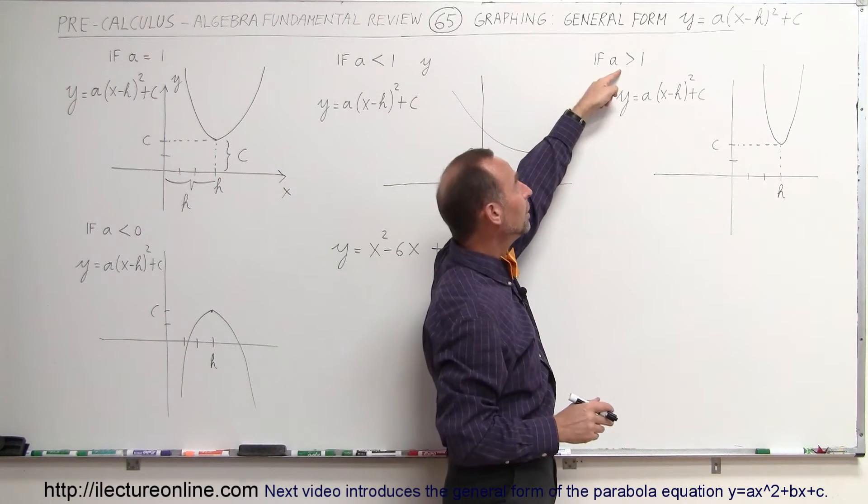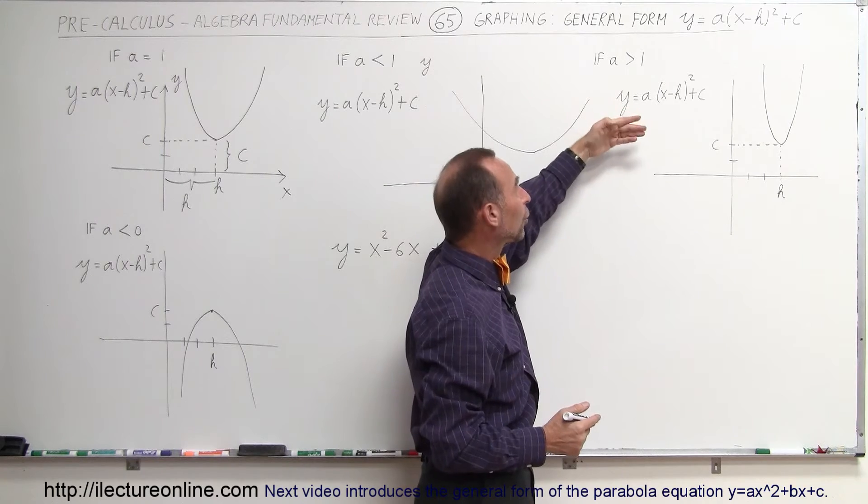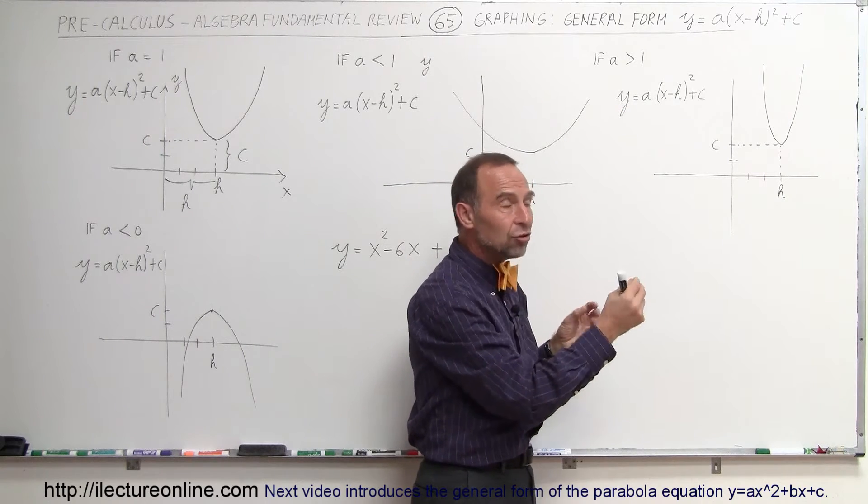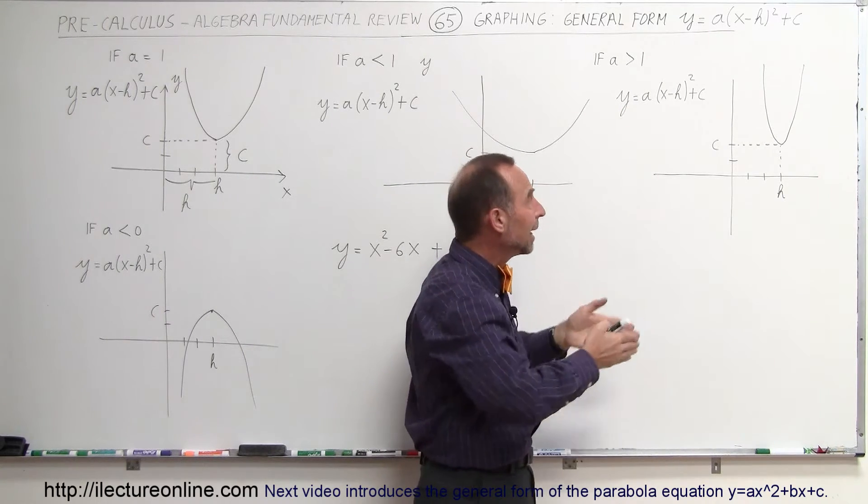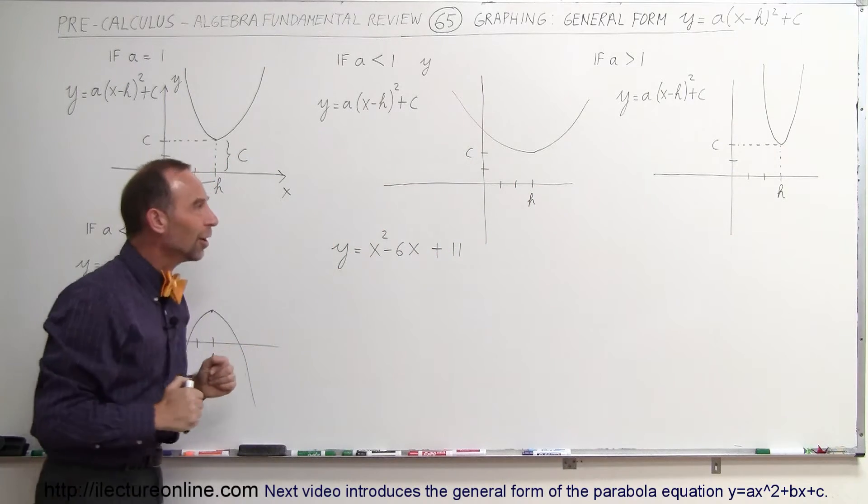If a is greater than 1, then the graph will become narrower because the values for y will go up more quickly. As x changes, y will change more quickly and you'll have a skinnier graph, a skinnier parabola.